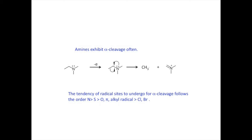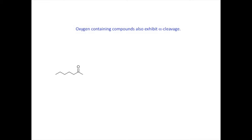The tendency for other radical sites to undergo this type of mechanism follows the order: nitrogen greater than sulfur, greater than oxygen, pi electrons, or alkyl radicals, which is also more probable than chlorine or bromine radicals.